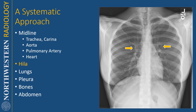Then I look at the hila. The hila are paired structures — really just the root of the organ. You can talk about the renal hila, the splenic hilum. It's basically that part of the organ where the vessels enter and exit, and in the case of the lungs, it's also where the bronchi branch out. On the frontal radiograph, the left hilum is usually slightly higher than the right hilum, or they can be at the same horizontal level. Usually the right hilum is not higher than the left, and if that is the case, you're probably looking at something abnormal.